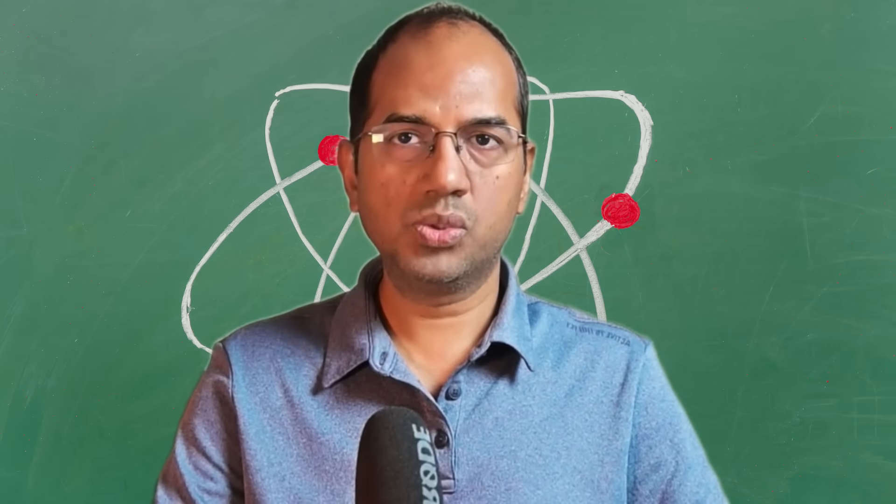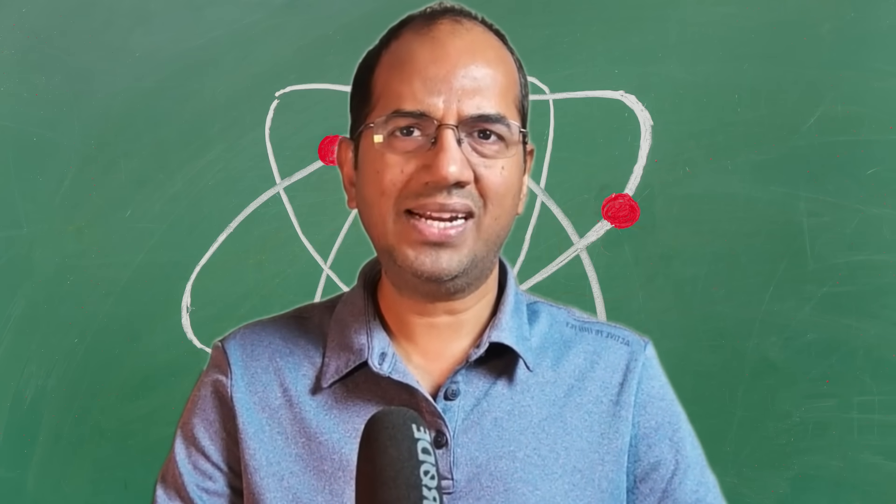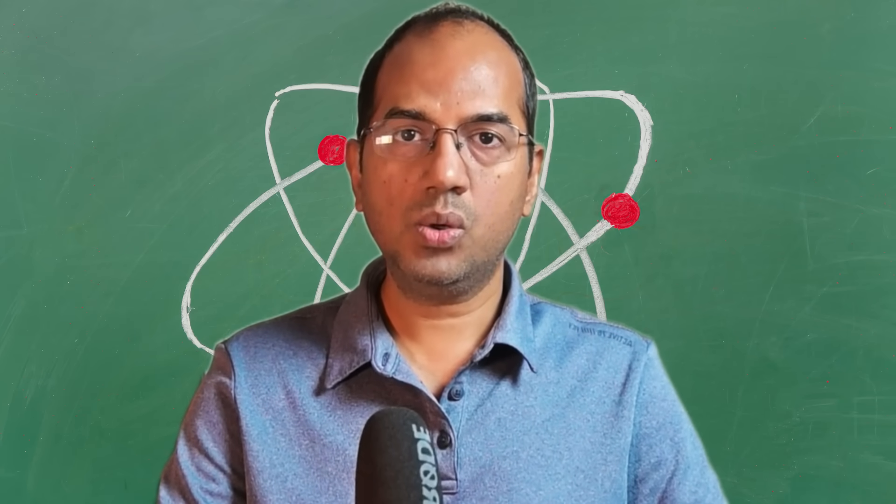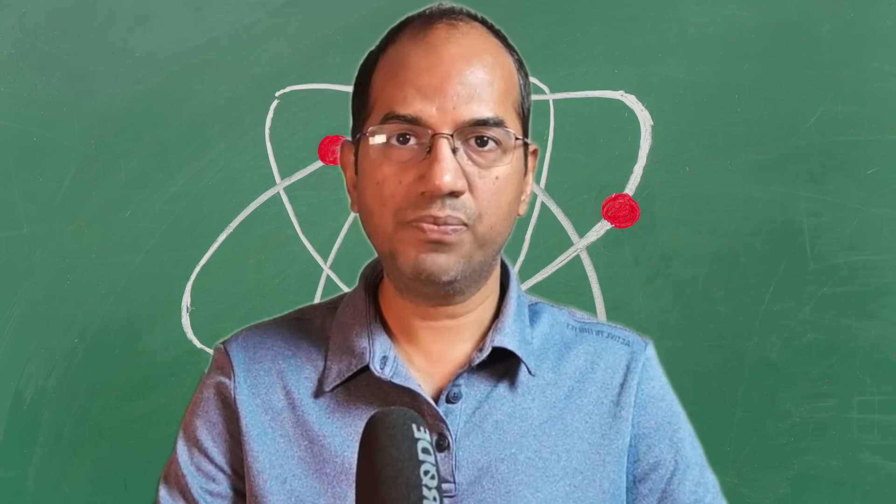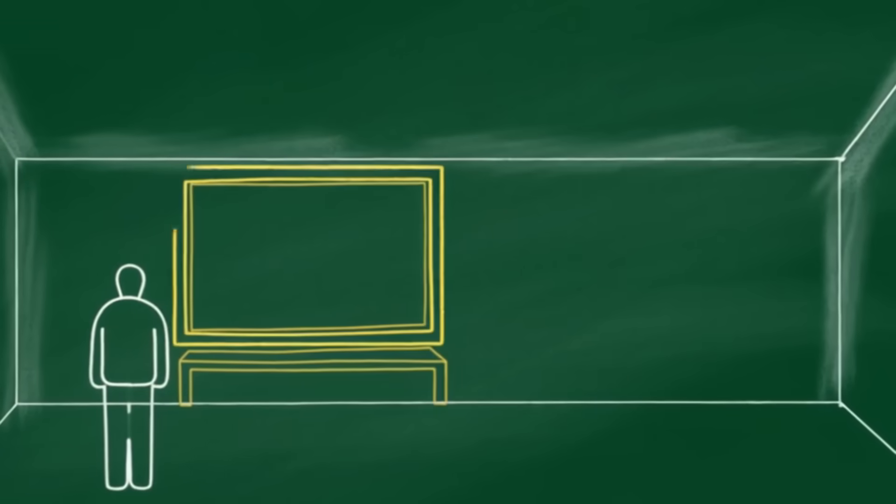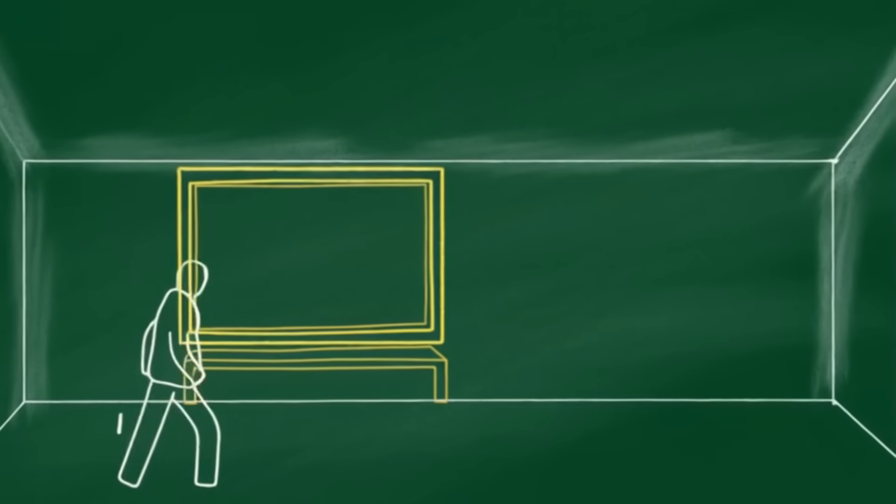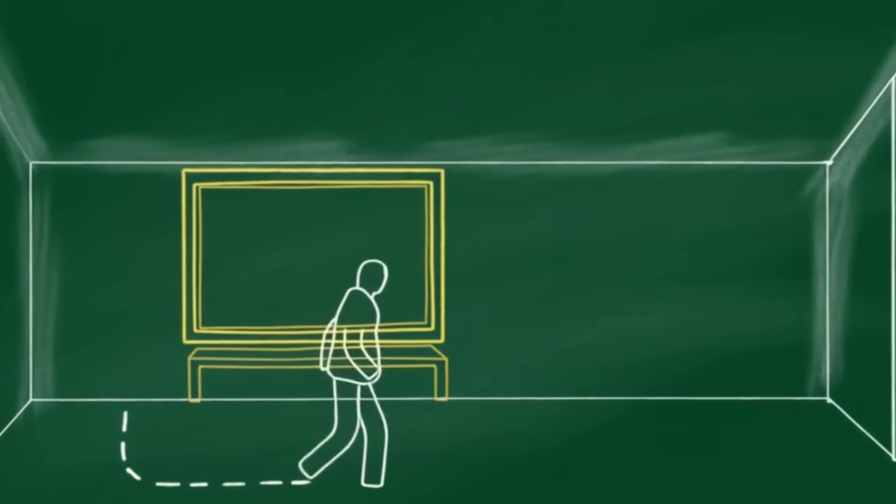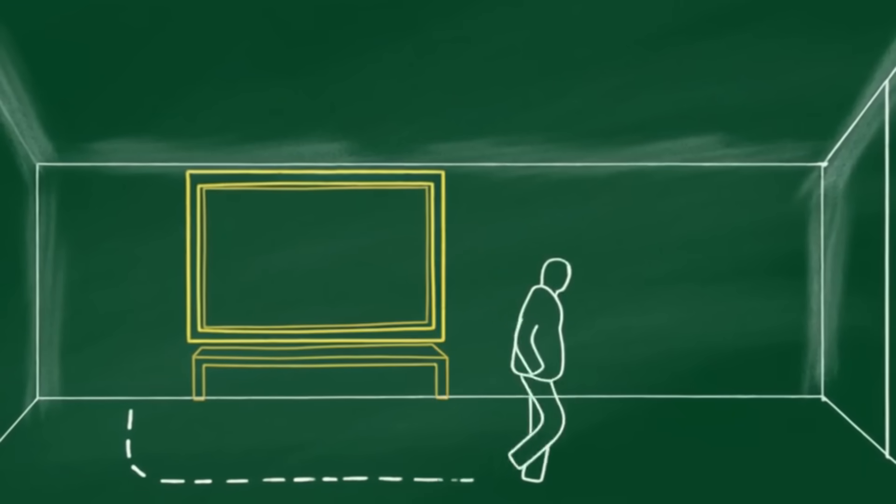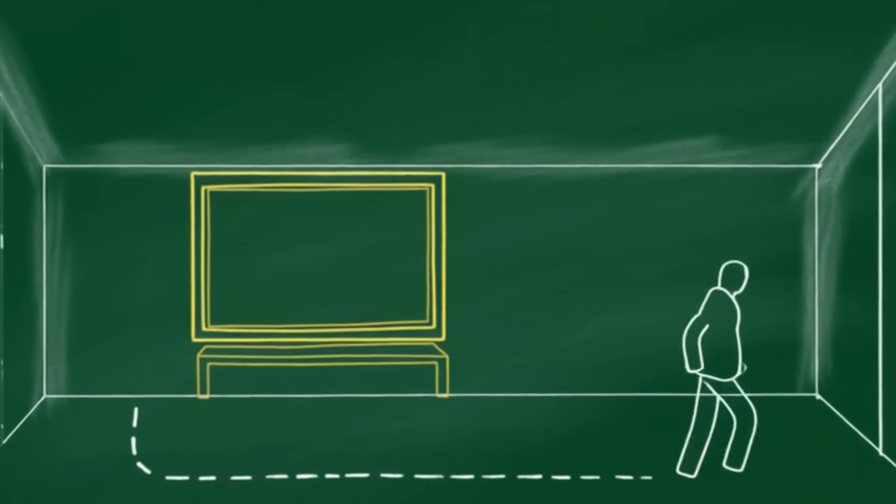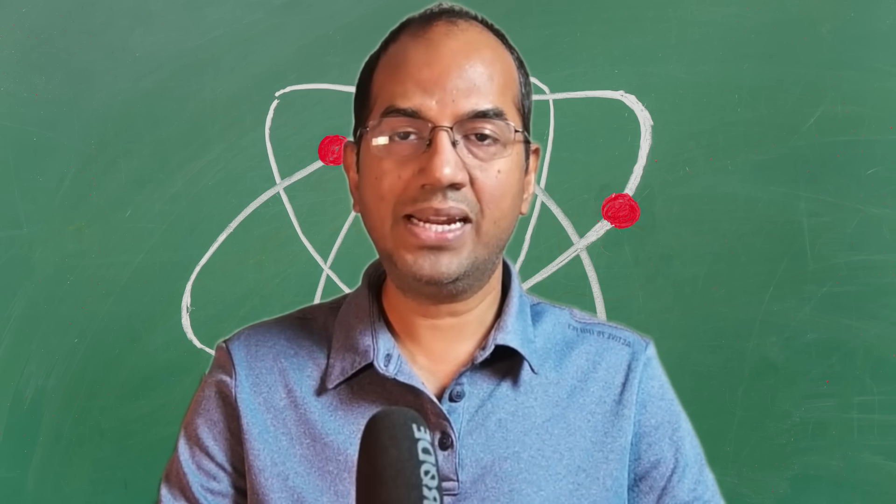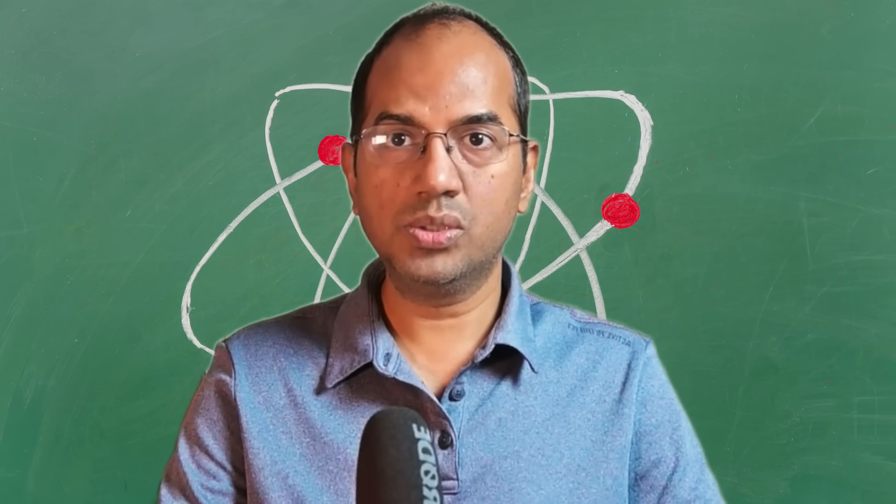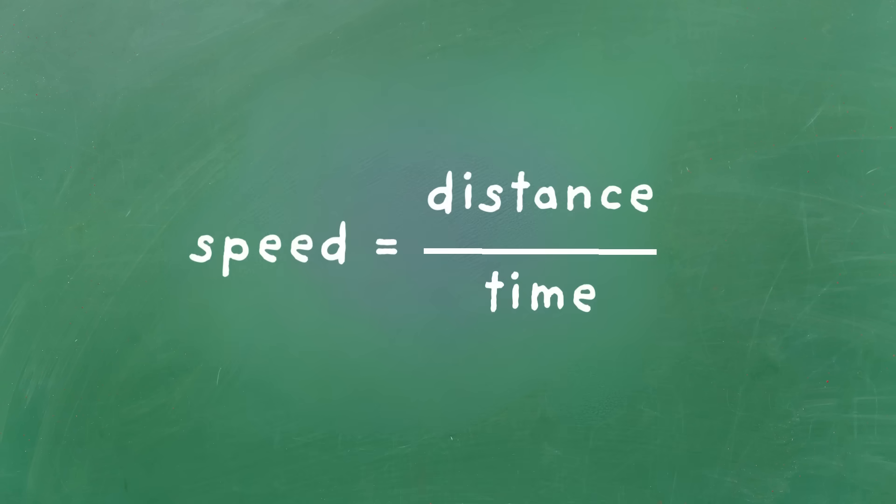Before we can break the rules of reality, we need to understand the rules we live by. Our whole lives are built on what feels like an obvious truth about space and time. Imagine you are standing in your room and you want to walk to the other side. You know without thinking that this will take some amount of time, a few seconds maybe. You know that you have to cover a certain distance, a few meters. This relationship is simple and predictable. Speed, as we have learned in school, is just distance divided by time.